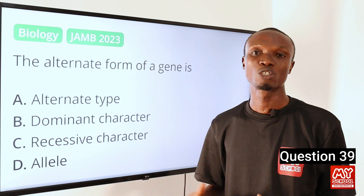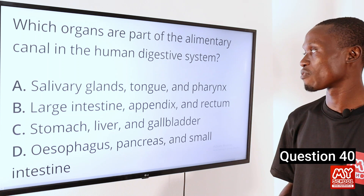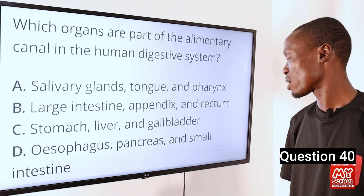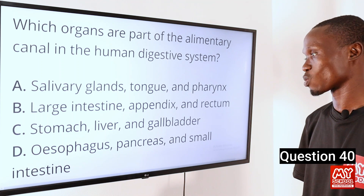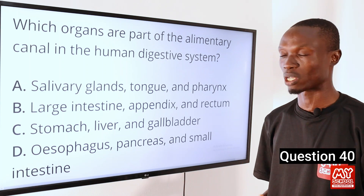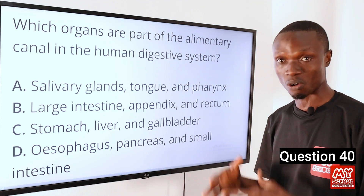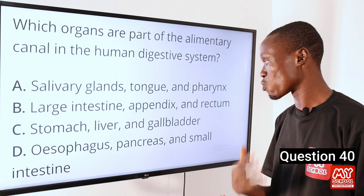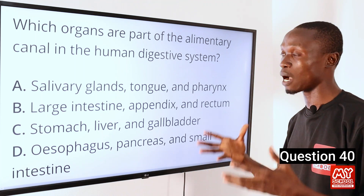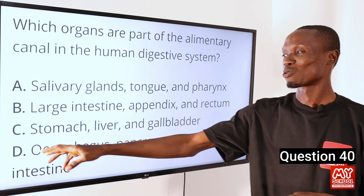Question 40. Which organs are part of the alimentary canal in the human digestive system? A. Salivary glands, tongue and pharynx. B. Large intestine, appendix and rectum. C. Stomach, liver and gallbladder. D. Esophagus, pancreas and small intestine. The answer is option D. The esophagus is a muscular tube connecting the mouth to the stomach; the pancreas plays an important role in producing and secreting digestive enzymes into the small intestine; and the small intestine — the longest part of the alimentary canal — is divided into three parts: duodenum, jejunum and ileum.